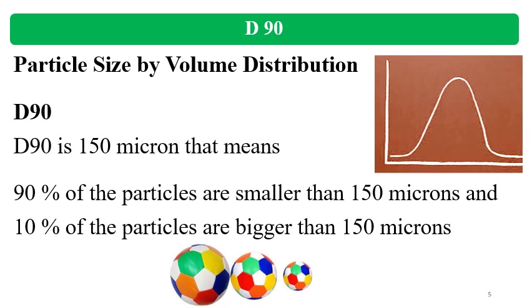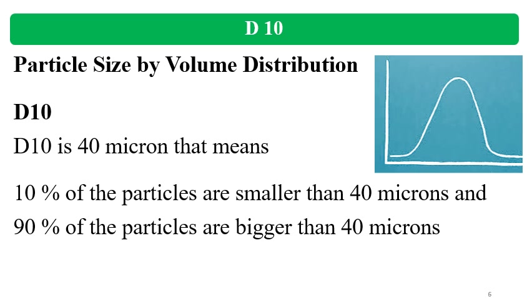Now, D90: if it is given as 150 microns, that means 90% of the particles are smaller than 150 microns, and the remaining 10% are larger than 150 microns. Then D10: if it is 40 microns, that means 10% of the particles are smaller than 40 microns, and the remaining 90% are larger than 40 microns. It is interesting to note that D10 and D90 are opposite to each other.